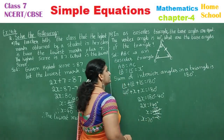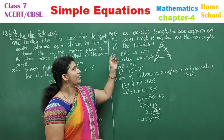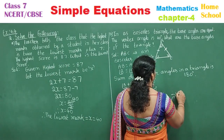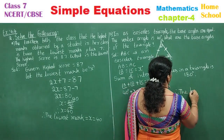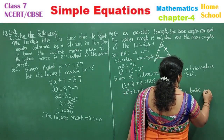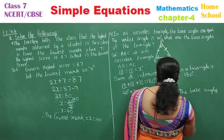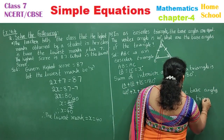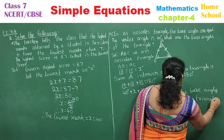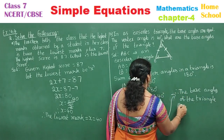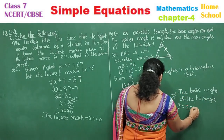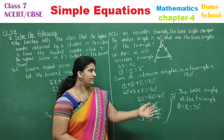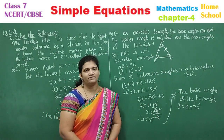Therefore x = 70°. The base angles of the triangle are angle B = angle C = 70°. Both base angles are equal at 70 degrees each.